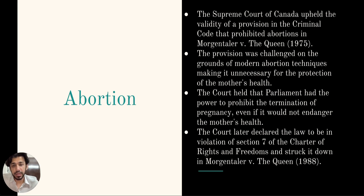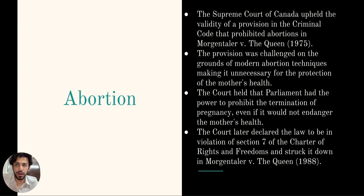However, in a subsequent case — Morgentaler v. The Queen in 1988 — the court declared the law to be in violation of Section 7 of the Charter of Rights and Freedoms and struck it down. Parliament has not enacted a new law on abortion since, and the Criminal Code no longer prohibits the procedure.